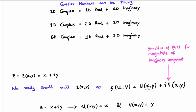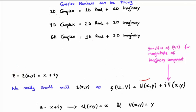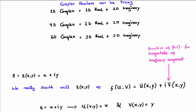Where u and v are both a function of x and y. Now, I'm sure you're immediately raising your eyebrows, saying that z itself is a function of x, the real component, and y, the imaginary component. And how can u be a function of both x and y if it's to calculate a real component? And by analogy, why can v be a function of x and y if it's to calculate an imaginary component? Surely, there should be no y here and no x here.